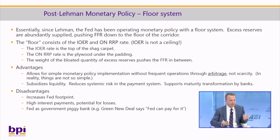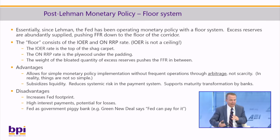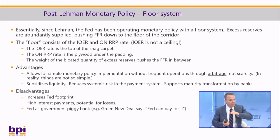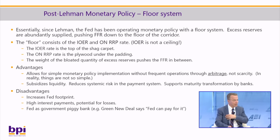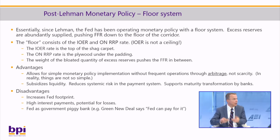The weight of the excess reserves pushes the federal funds rate somewhere between the top of the shag carpet and the plywood. The advantages of floor systems are that they allow for simple monetary policy implementation through arbitrage, not scarcity. The other advantage is that they subsidize liquidity — this is a legitimate advantage. It reduces systemic risk in the payment system and supports maturity transformation by banks. Just like the discount window and FDIC insurance, you're providing these subsidies for maturity transformation because bank credit is useful. The disadvantages are it increases the Fed's footprint, makes for high interest payments and a potential for losses, and also allows the Fed to potentially be a piggy bank for Congress.